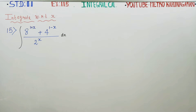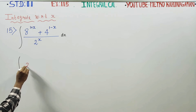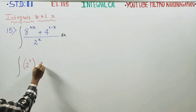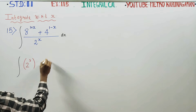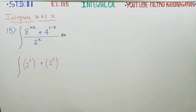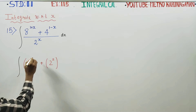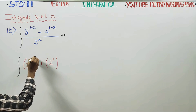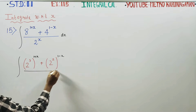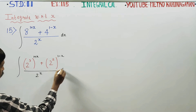I have to integrate with respect to x. 8 can be written as 2 power 3. Again, 4 can be written as 2 square. So we have 2 power 3, with exponent (1 plus x), plus 2 power 2, with exponent (1 minus x), divided by 2 power x, dx.